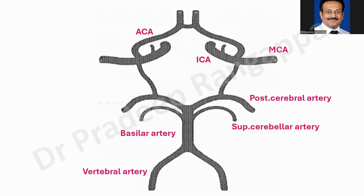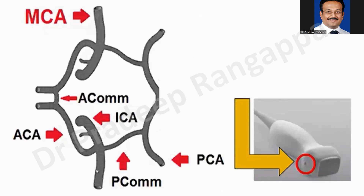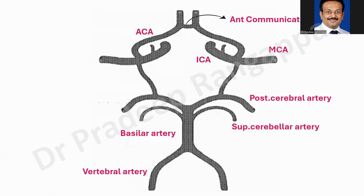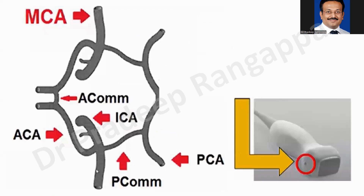The anterior communicating artery may not be very easy to visualize. For all practical purposes, we can visualize the MCA (easiest), followed by ACA, then PCA (posterior cerebral artery), and to some extent the internal carotid artery. When we place the transcranial Doppler on the temporal bone, the orientation of these vessels appears as follows: ACA here, PCOM here, with MCA being the most accessible.